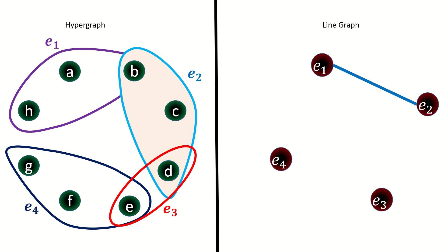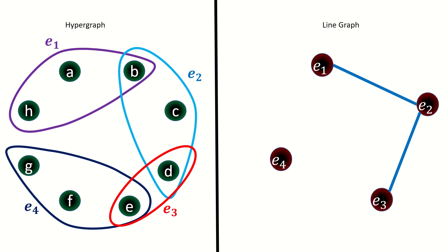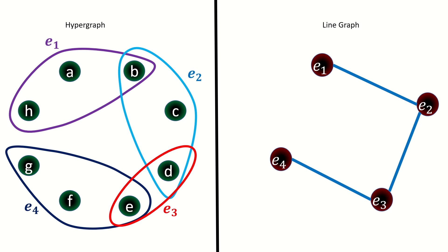In the hypergraph, edge e_2 shares vertex b with edge e_1, and vertex d with edge e_3. In the hypergraph, edge e_3 shares vertex d with edge e_2, and vertex e with edge e_4. So in the line graph, vertex e_3 is adjacent to vertices e_2 and e_4. Finally, edge e_4 shares vertex e with edge e_3, so in the line graph vertex e_4 is adjacent to vertex e_3. This is the finished line graph of our hypergraph.